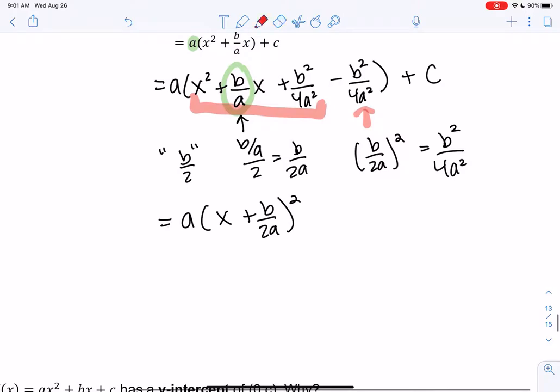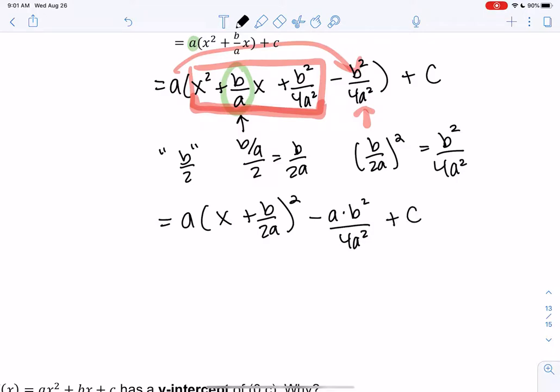So here's my perfect square. So I'm going to keep the a with that. And then I'm going to distribute the a to this one to get it out of the perfect square. So we get minus a times b squared over 4a squared plus c.